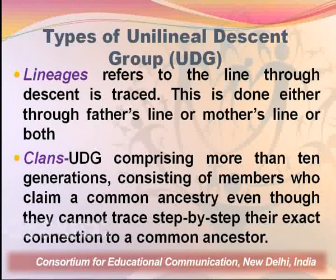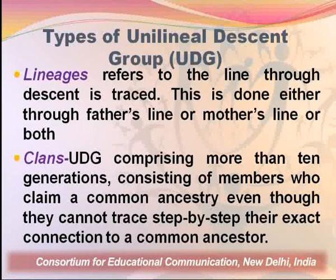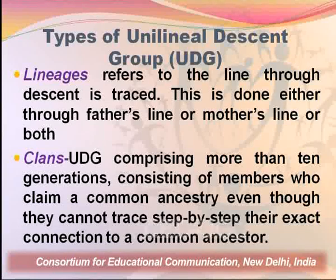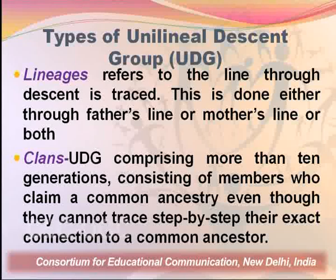A larger group than the lineage is a clan. A unilineal descent group comprising more than ten generations, consisting of members who claim a common ancestry even though they cannot trace step-by-step the exact connection to a common ancestor. Here we see the difference between lineage and clan — a clan is a larger group in which the common ancestor is not known, and we cannot genealogically trace the exact relation between the ego and the members of the clan.